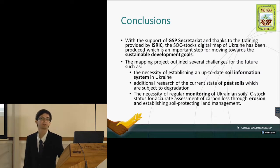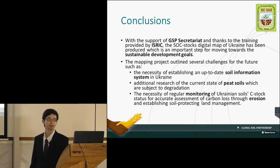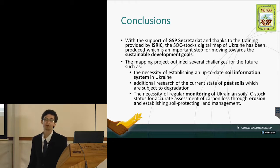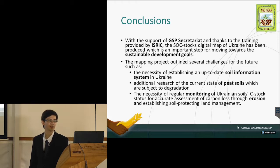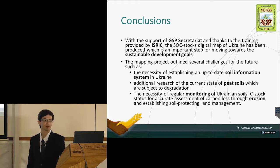With the support of GSP Secretariat and thanks to the training provided by ISRIC, the soil organic carbon stocks digital map of Ukraine has been produced, and we view it as an important step towards the sustainable development goals. However, this mapping project also underlined some issues and challenges for our future work, such as the necessity of establishing an up-to-date soil information system in Ukraine.